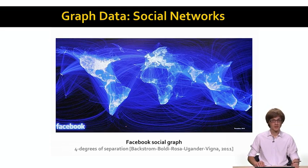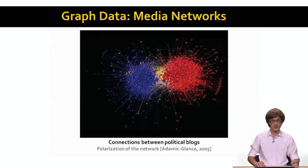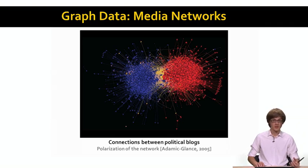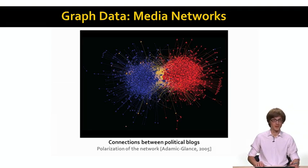Another set of data that can be represented as graphs are social media networks. For example, here I'm showing an illustration of the structure of the United States blogosphere around the presidential election in 2004. What you see are basically two clumps — two communities — that correspond to the two political parties in the United States. You can see how nodes in one cluster link to the other cluster, with some cross-linking between the two, showing some amount of polarization.